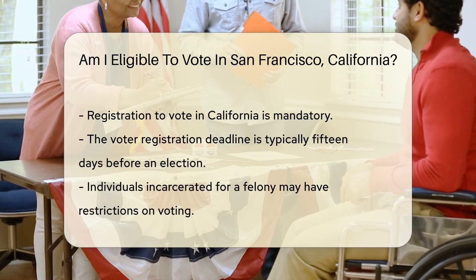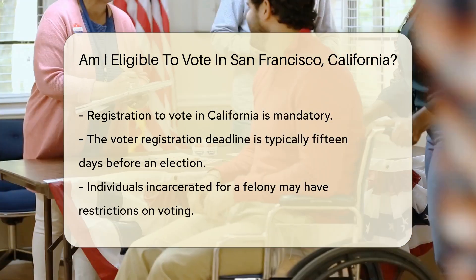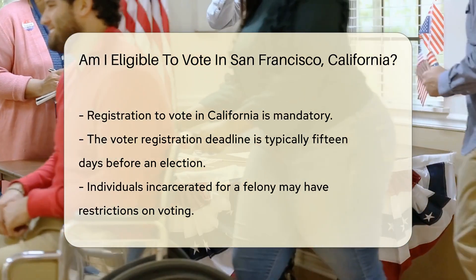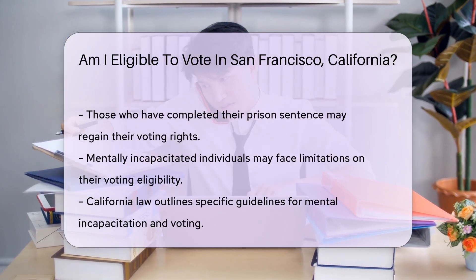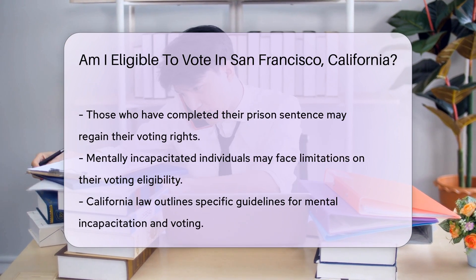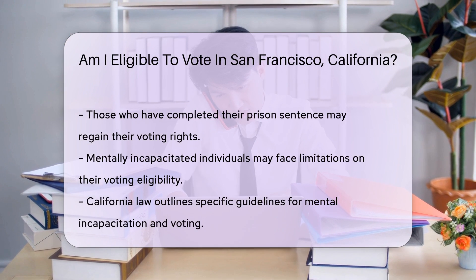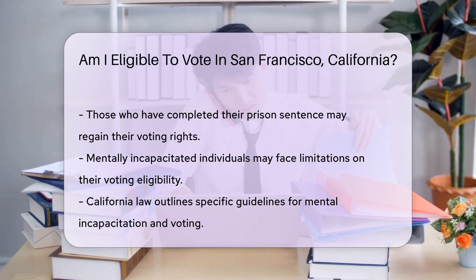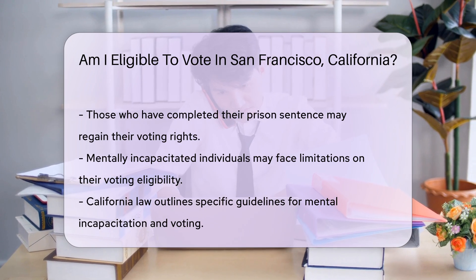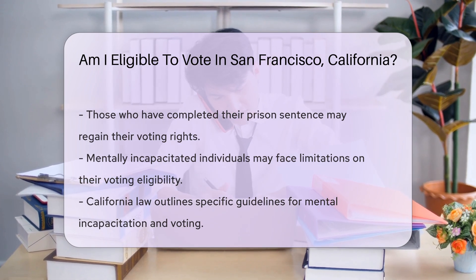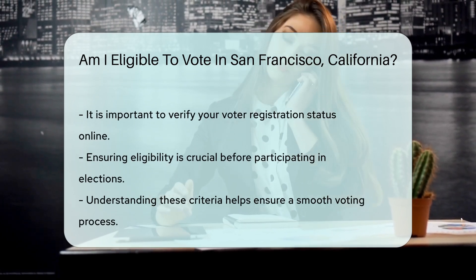Another important aspect is registration. You must be registered to vote in California, and the registration deadline is typically 15 days before an election. It is also essential to note that individuals currently incarcerated for a felony conviction may face restrictions. However, if you have completed your prison sentence, you may regain your voting rights. Furthermore, individuals who are mentally incapacitated may have limitations on their voting eligibility, and California law provides specific guidelines regarding this matter.